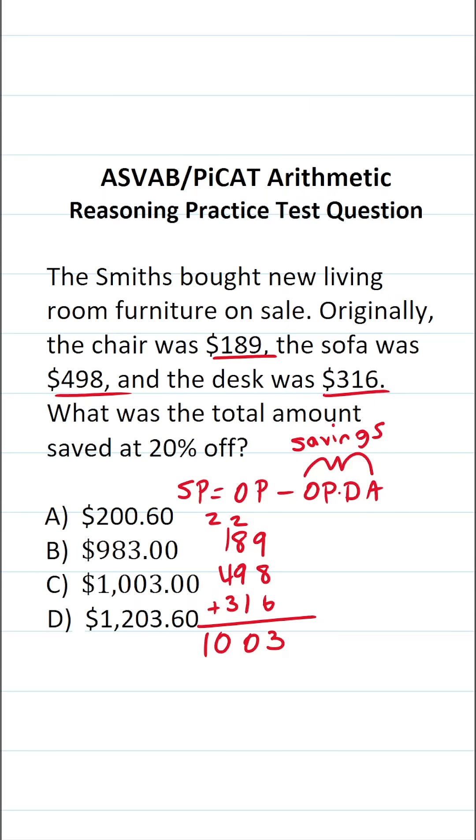All right, so we can see that our total price, our original price, is going to be $1,003. And we have a discount amount of 20%. Now, you can express 20% as the fraction one-fifth or as the decimal 0.2. In this case, it makes more sense to express it as the decimal 0.2.